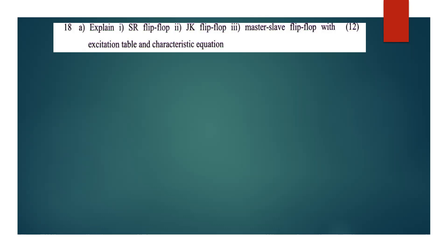Explain SR flip-flop, JK flip-flop, and master-slave flip-flop with excitation table and characteristic equation. For the master-slave flip-flop, you have a diagram and an explanation. If you have an excitation table, you can explain the characteristic equation.